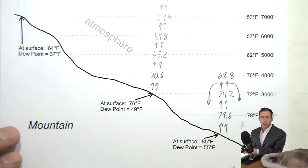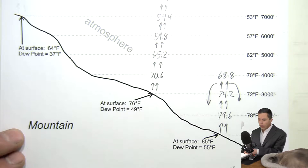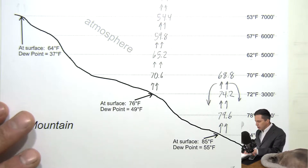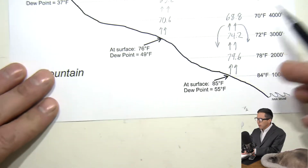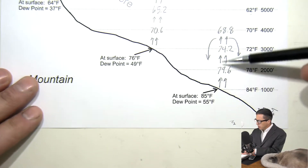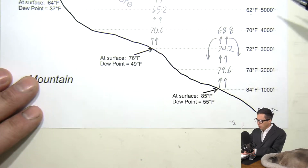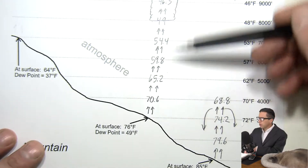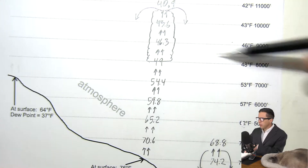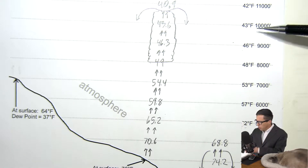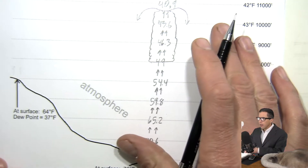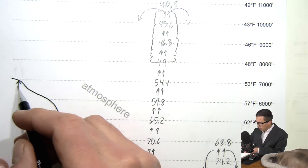In this video we're going to continue looking at the worksheet that we started in the lecture on convection. I did two locations in the lecture: this one here which turns out to be a little thermal with no cloud, and this one which turns out to have a cloud that starts at 8,000 feet and stops somewhere between 10 and 11,000 feet. So what I'm going to do next is this one over here.